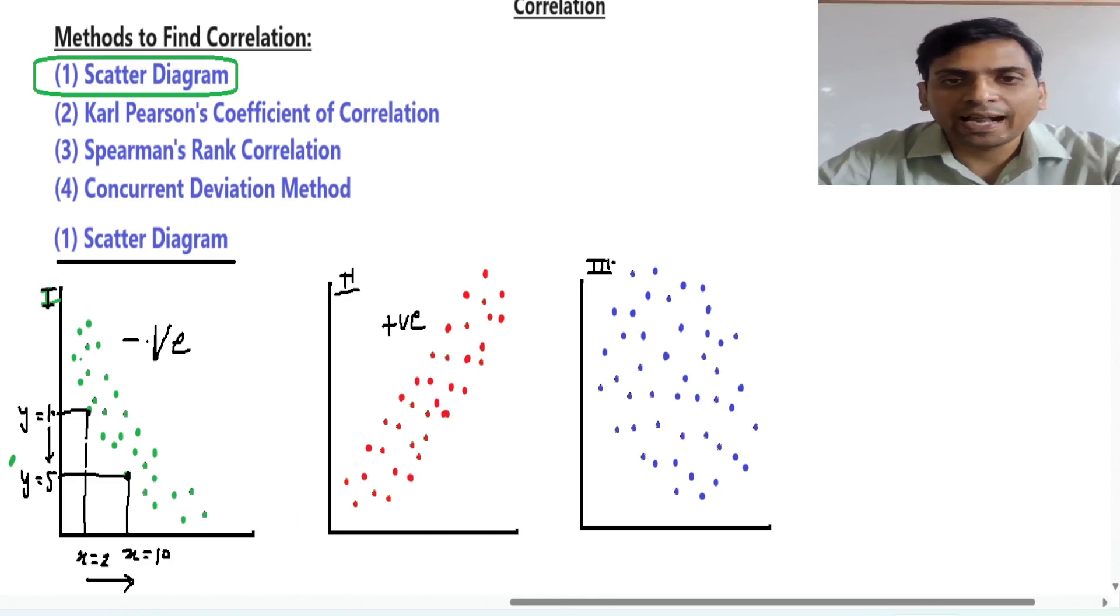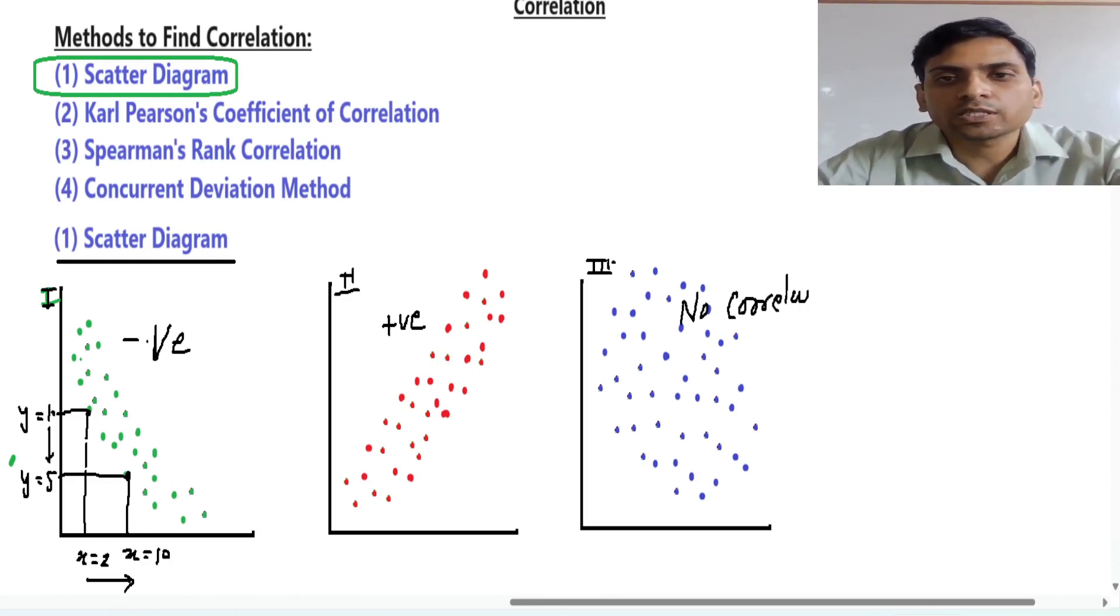Now in the third case you will see there is kind of confusion. We can't identify positive direction or downward sloping or upward sloping for positive correlation. So as we are confused whether this is positive or negative, this means there is no correlation because we can't identify positive or negative. So this is no correlation.